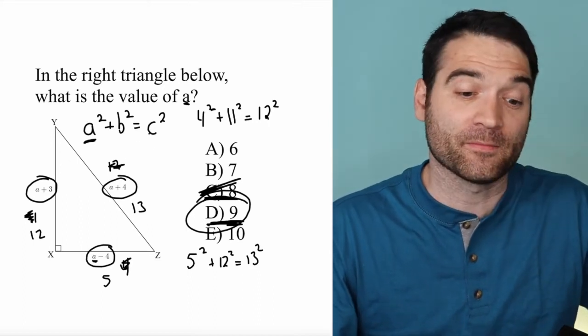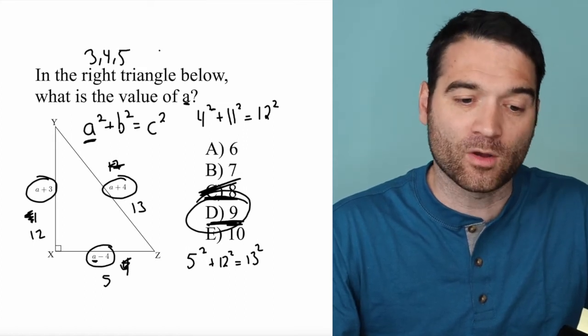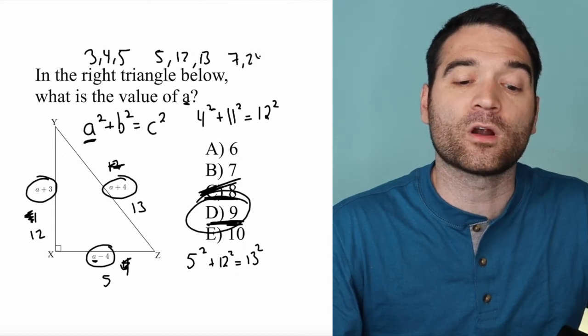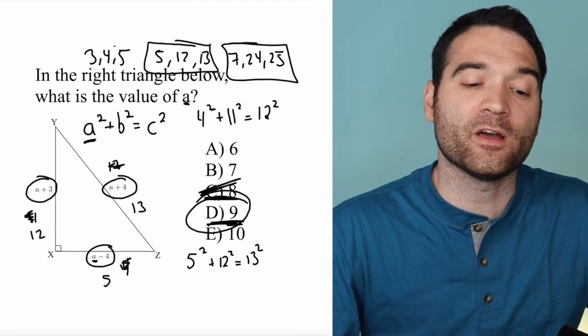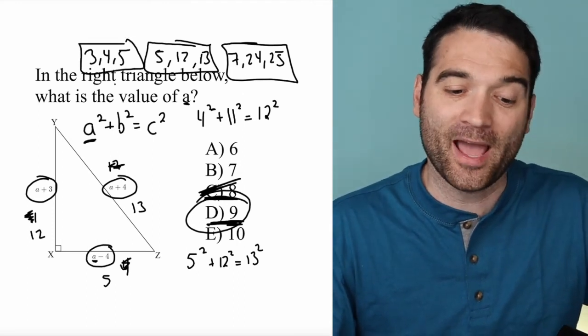I'm going to give you the other ones here: 3, 4, 5 is one of them; we have 5, 12, 13 here; and 7, 24, 25. All these are triplets of numbers that work in the a squared plus b squared equals c squared pattern.